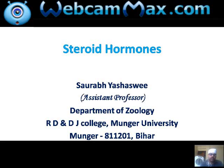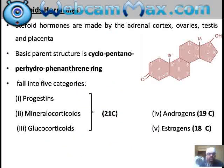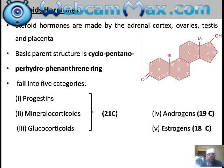Talking about steroid hormones, we should know their parental structure. The parental structure is the cyclopentanoperhydrophenanthrene ring. These steroid hormones are synthesized by the adrenal cortex, gonads, testes, and placenta. We divide steroid hormones into five classes: progestins, mineralocorticoids, glucocorticoids — which are 21-carbon compounds — androgens, which are 19-carbon compounds, and estrogens.